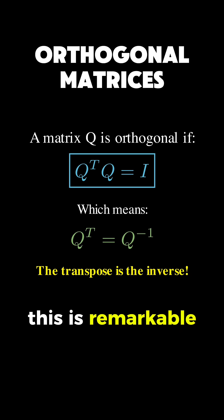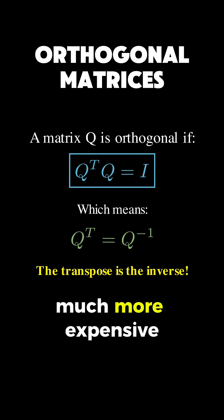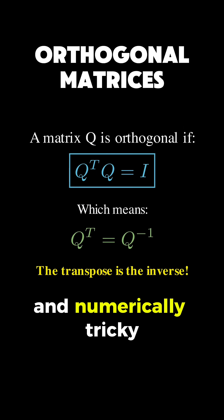This is remarkable, because computing a transpose is trivial. You just flip the matrix along its diagonal, whereas computing a matrix inverse is typically much more expensive and numerically tricky.